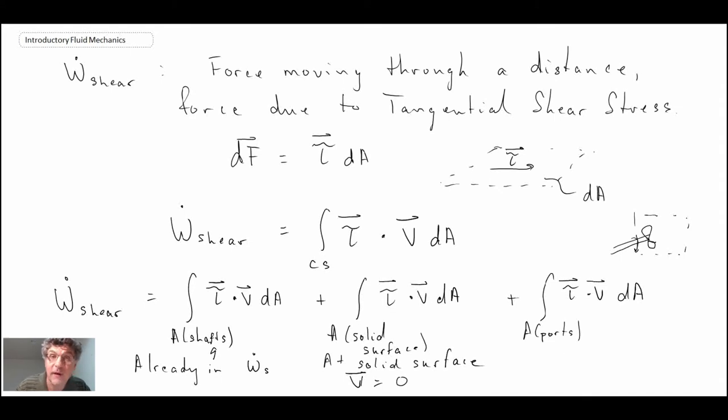Finally, we have the one for crossing at ports. If you create your control volume in a manner that the control volume is normal to the flow crossing that boundary, then we would have τ is perpendicular to V, and if τ·V, and they're perpendicular, that will equal zero. But we don't always necessarily have that condition, so we will retain this last term. But the other two will go away through careful choice of the control volume, as well as the fact that the shaft work is already in the shaft work term.